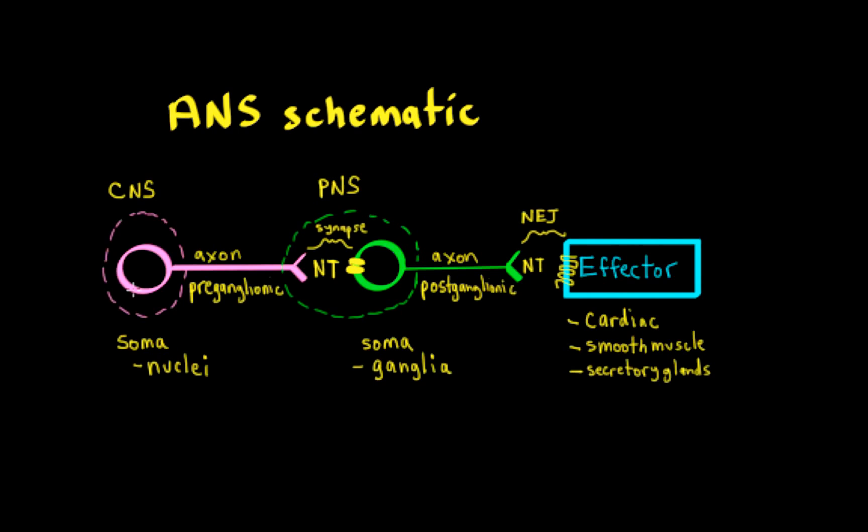So it's important to recognize that the preganglionic neuron, even though it's shown as the first neuron here in this picture, there's other neurons that have to have inputs onto those preganglionic neurons to regulate the activity of the sympathetic and parasympathetic divisions of the ANS.